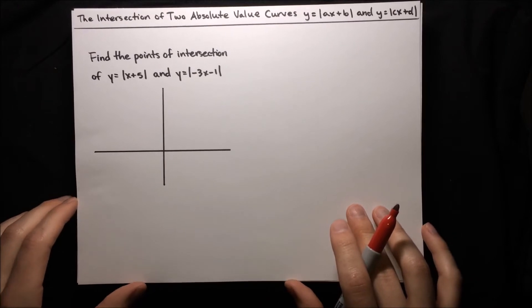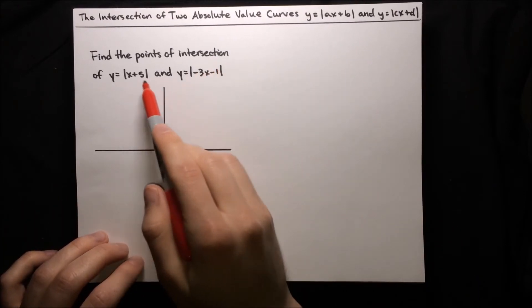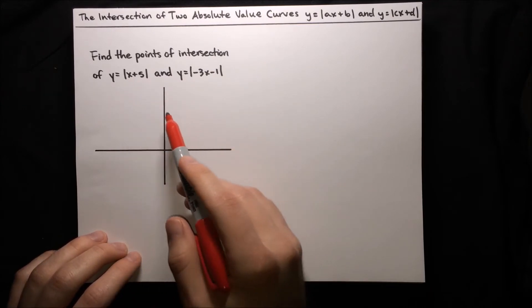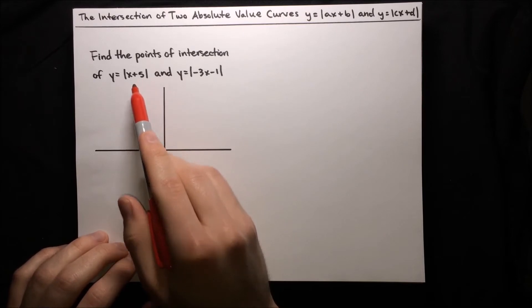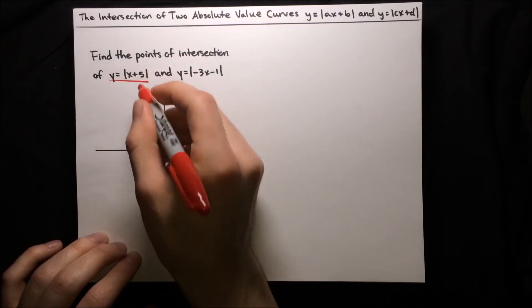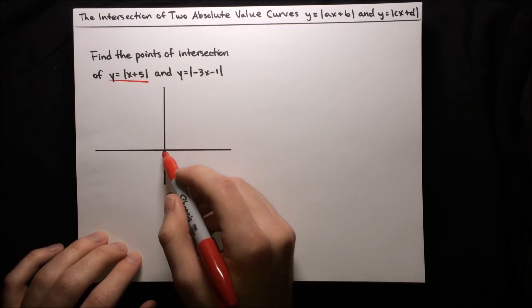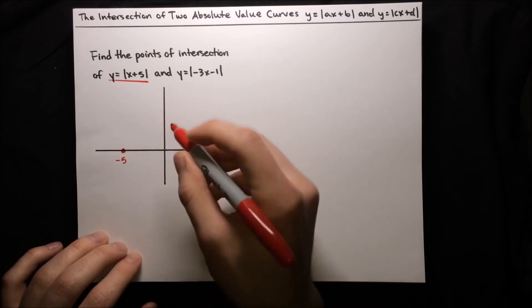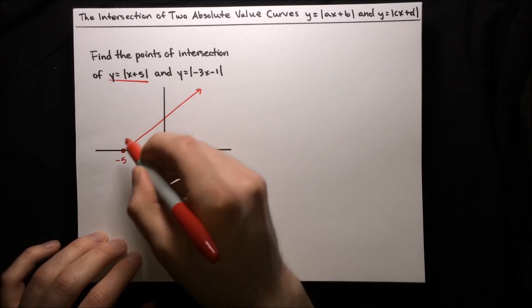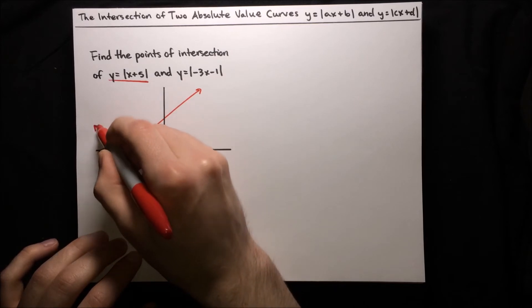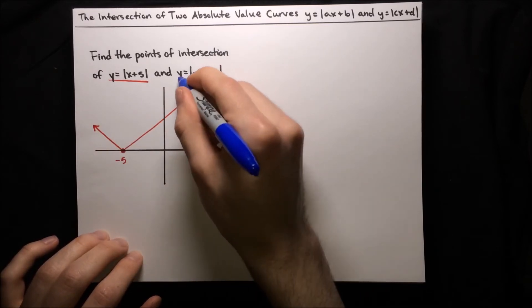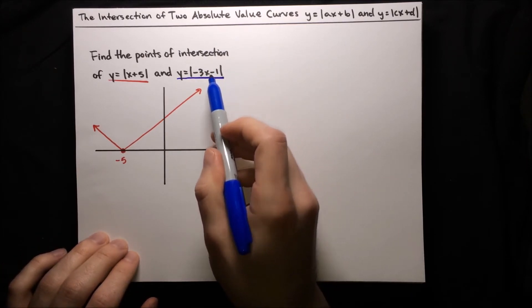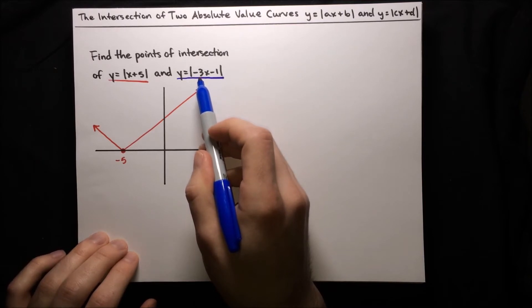Here's a similar kind of problem. We're trying to find the points of intersection of two absolute value curves. The first curve can be graphed in a similar way to the previous curves — it's again just a horizontal shift, a shift of 5 to the left. So the bottom of our v shape is going to be at negative 5, and we'll draw a v emanating from there. The other curve is a little bit tougher to graph because not only is there horizontal shifting, there's also some rescaling with that 3 coefficient.